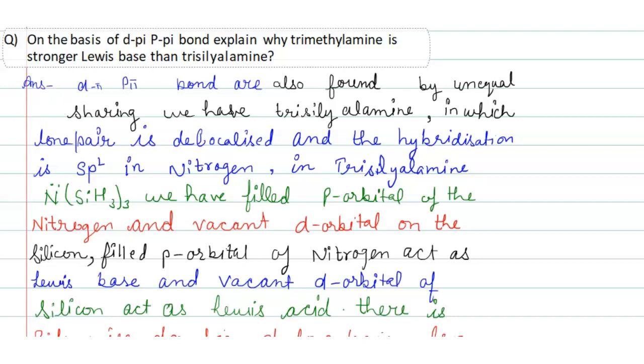Hello friends, welcome back to my channel. Today we will discuss the question: On the basis of d(pi)-p(pi) bond, explain why trimethylamine is a stronger Lewis base than trisilylamine. The answer is that d(pi)-p(pi) bonds are involved.